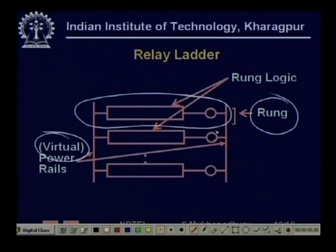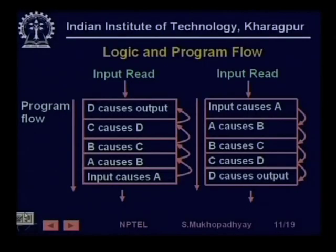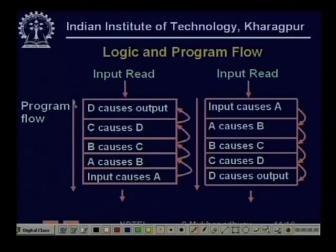This is the way we are going to draw them. Now we need to understand how the PLC program will be executed. One after the other, starting from the top, after the inputs are read, program execution evaluates the logic of the rungs and output values from the top one after the other. Typical program flow is from the top through individual rungs.